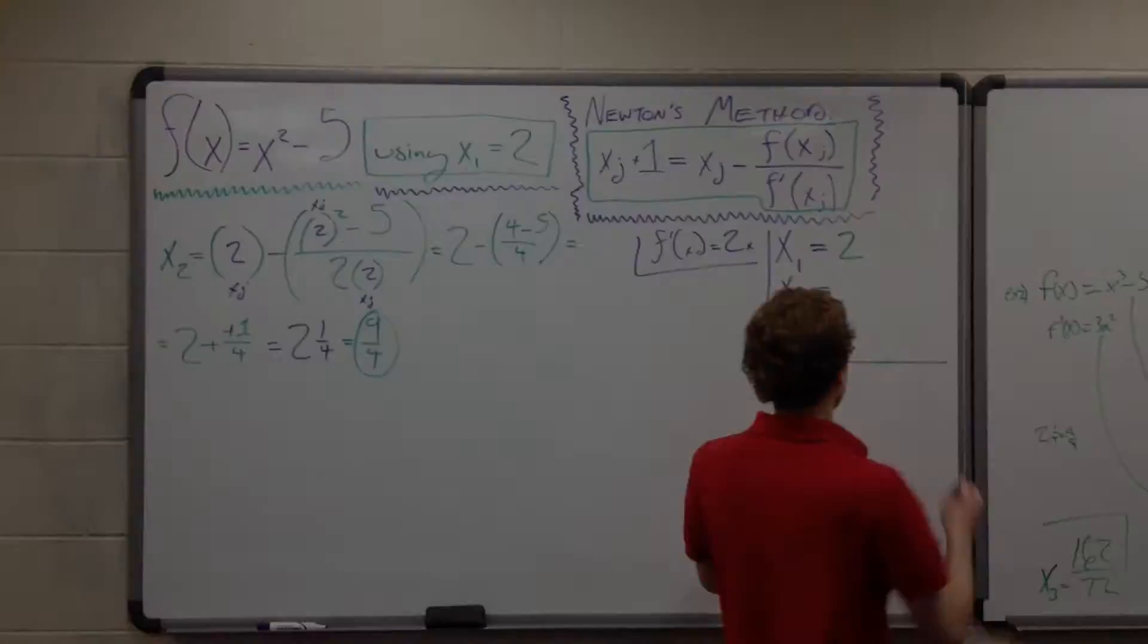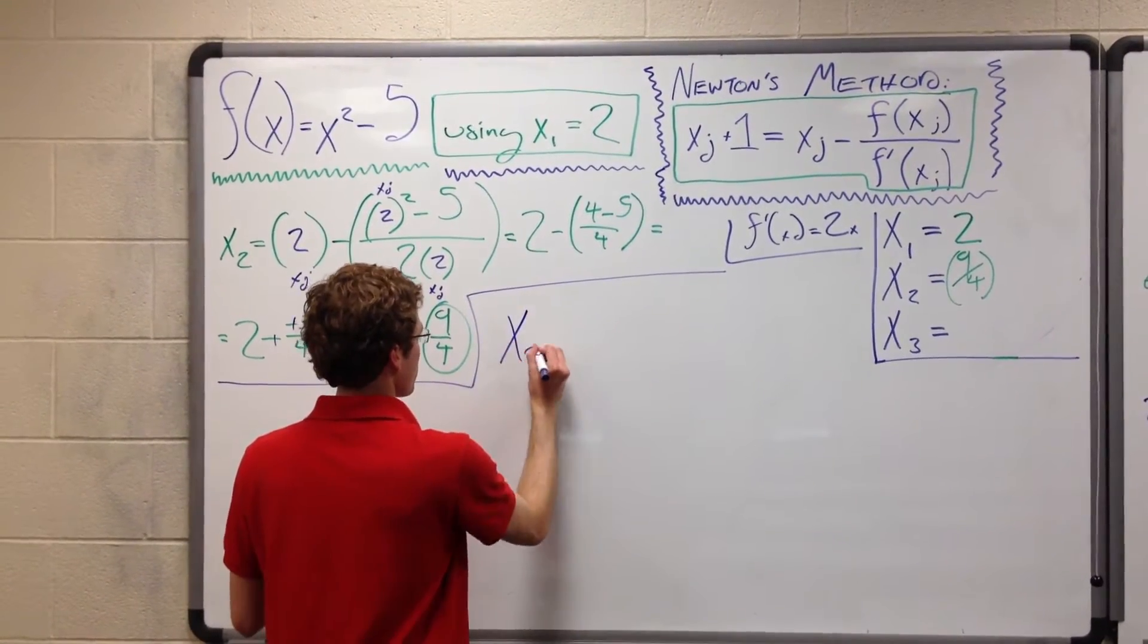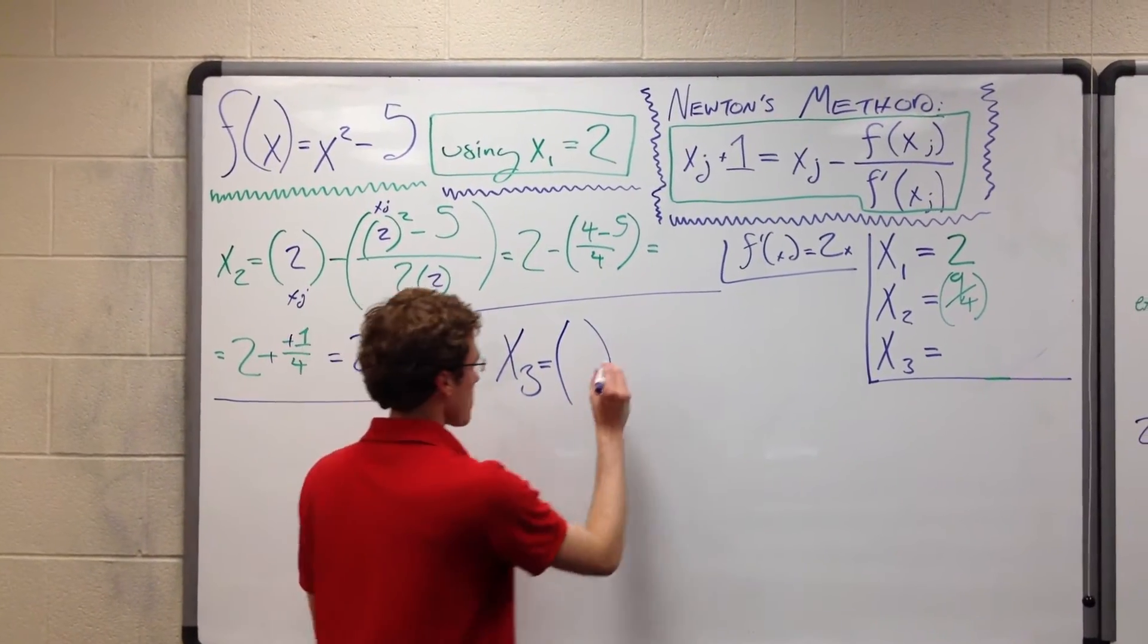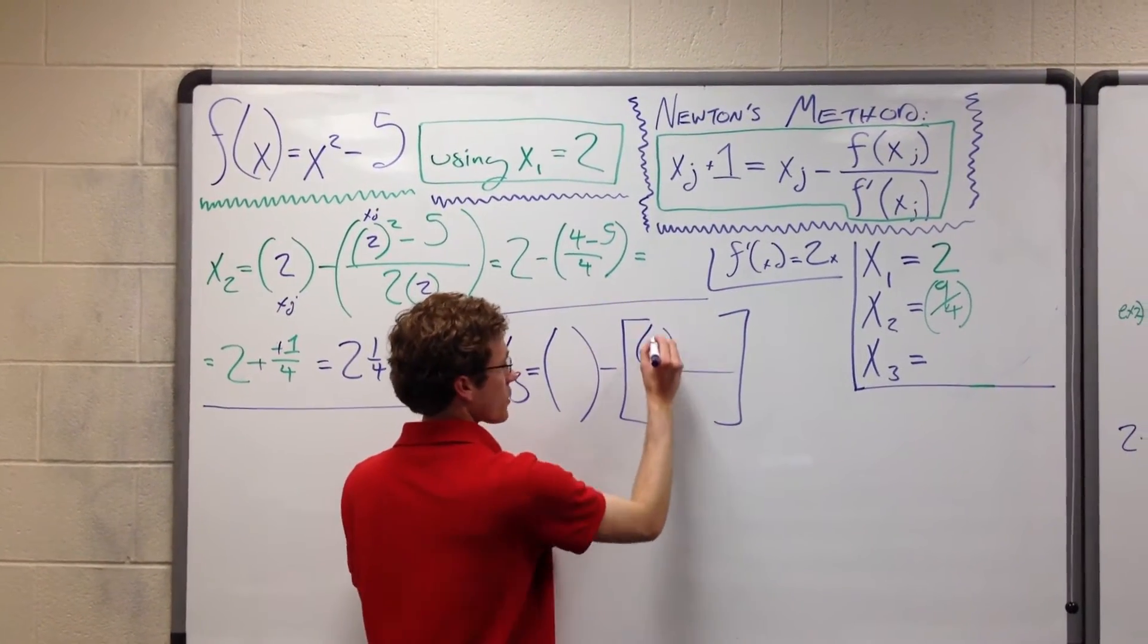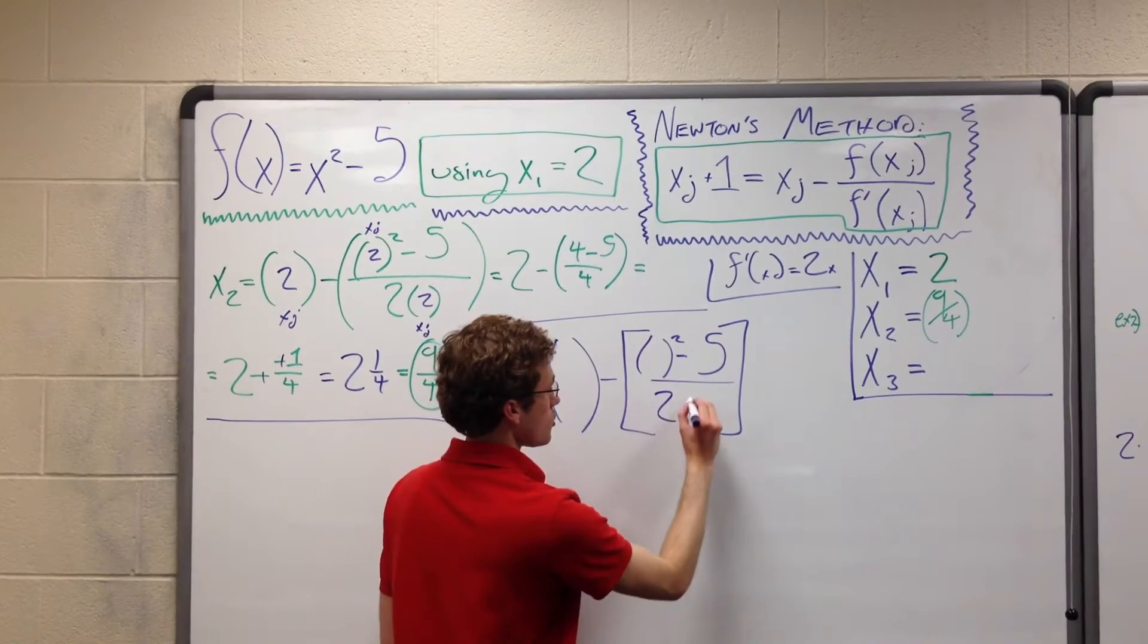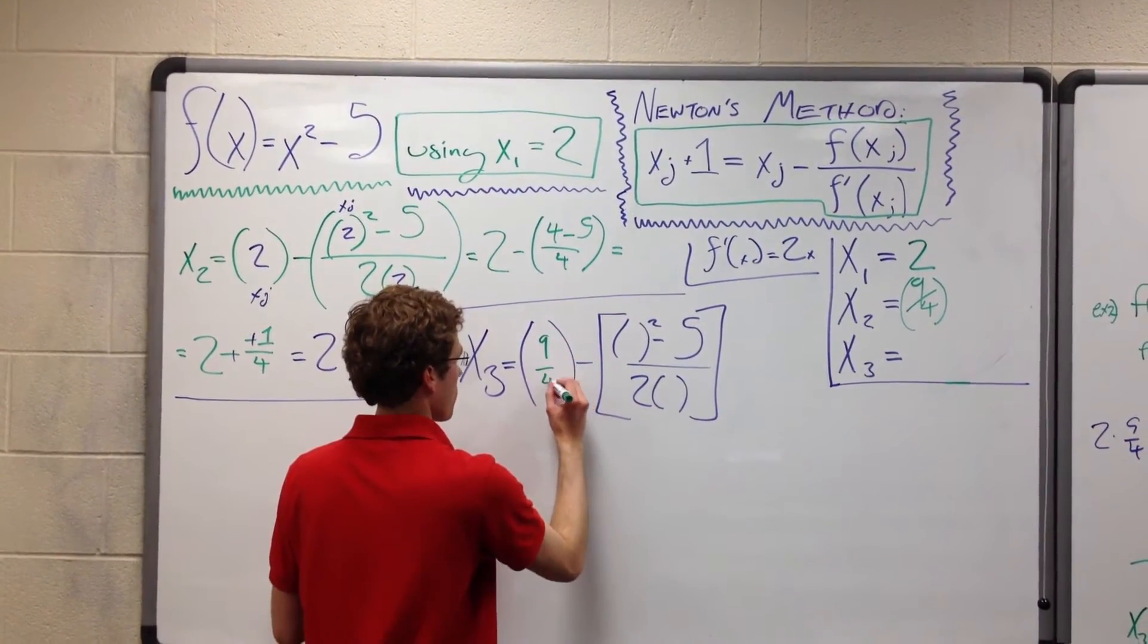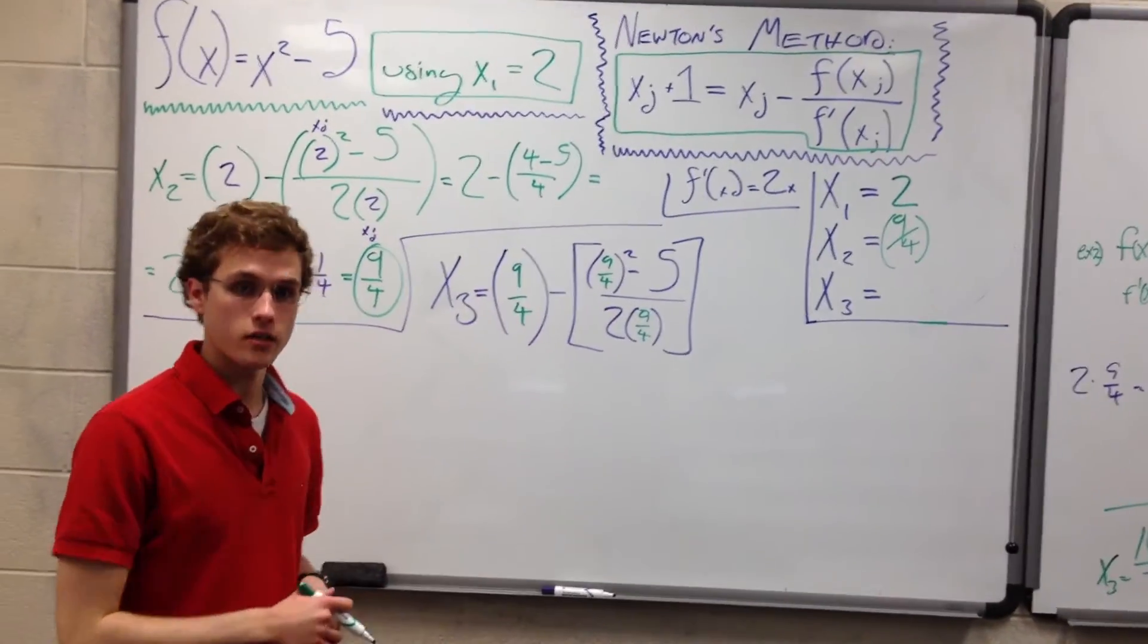We're doing the exact same thing as before. This method is all about repetition. So x₃ = xᵢ₊₁. xᵢ, we'll just have parentheses, we don't want to mess up, minus f(xᵢ), our original equation x² - 5, over the derivative of that function, 2xᵢ. We're going to put xᵢ where the variable goes. We know our xᵢ is our x₂ in this case, so 9/4.